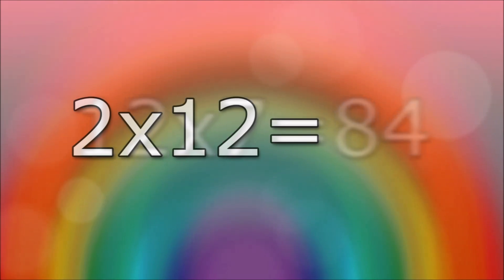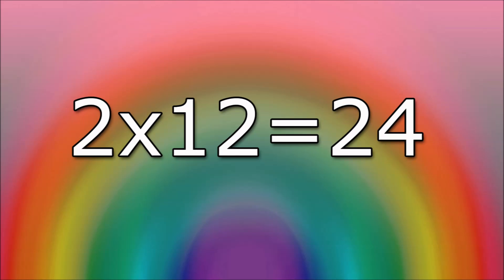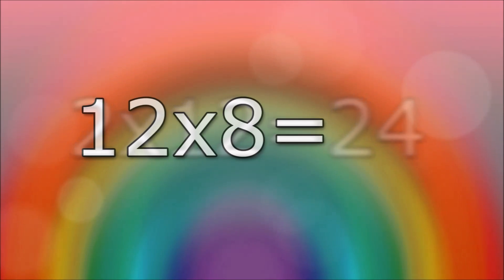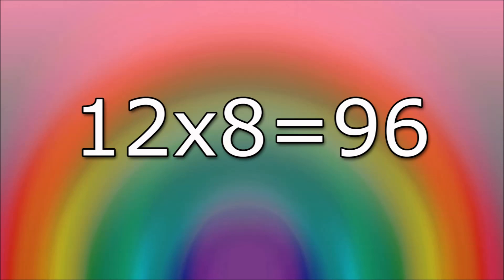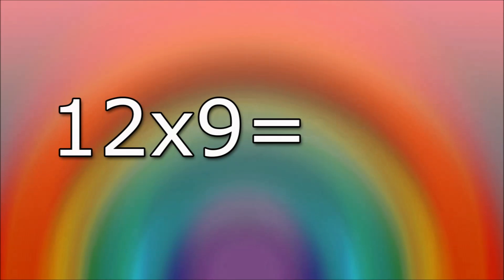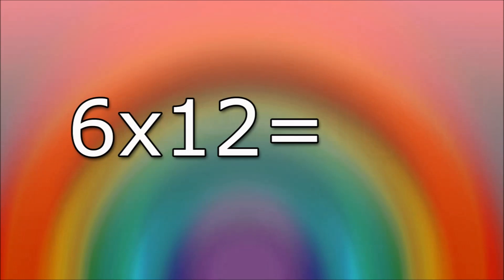2 times 12 equals 24. 12 times 8 equals 96. 12 times 9 equals 108. 6 times 12 equals 72.